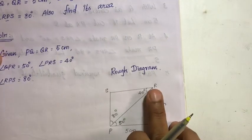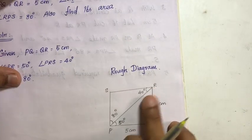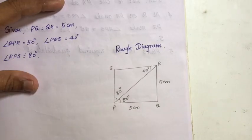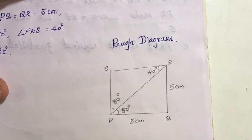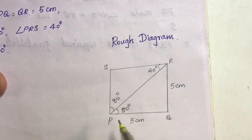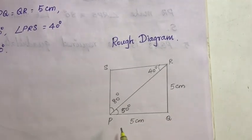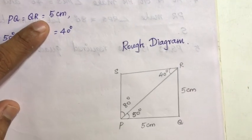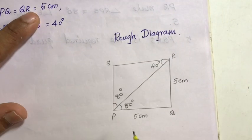Second step: draw a rough diagram. So for the quadrilateral, draw 4 sides and 4 vertices roughly. Mark PQ and QR, randomly showing 5 centimeter measure.